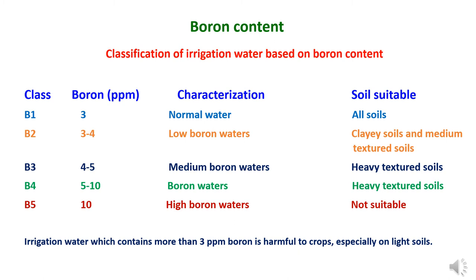Fourth class B4, where boron content ranges between 5 to 10 ppm — known as boron water — can also be used for heavy textured soils with certain management practices. Fifth class B5, where boron content is more than 10 ppm — characterized as high boron water — not suitable for irrigation. Generally, irrigation water containing boron content more than 3 ppm is harmful to crops, especially light soils. These can be used depending upon suitability of various soils and crops.